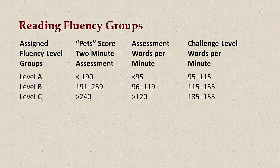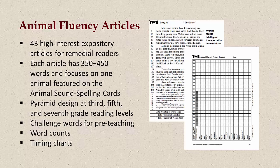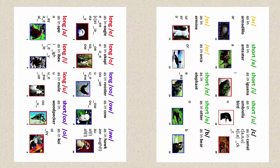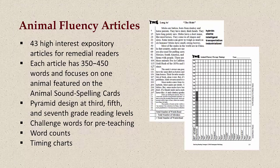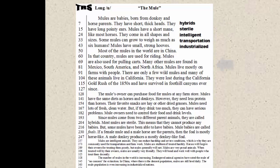Each assigned level will have faster modeled readings to push students to read more quickly and more accurately. Keep these groups flexible, as some students will progress rapidly and may need to be reassigned to reflect their improved reading fluency scores. Also separate students who do not work well together. The Teaching Reading Strategies Animal Fluency articles are high-interest expository passages designed for remedial readers. Each of the 43 articles has 350 to 450 words and focuses on one of the animals featured on the animal sound spelling cards. Readers learn about the physical characteristics of the animal, the animal's habitat, what the animal eats, the animal's family, interesting facts, and the status of the species, whether endangered or not.